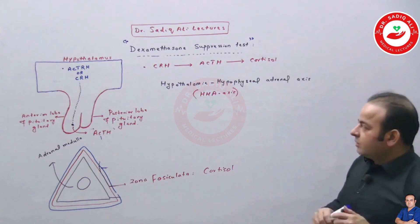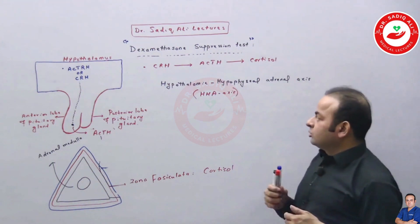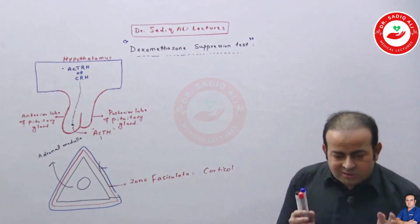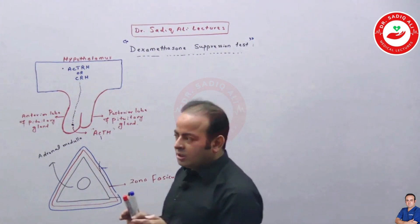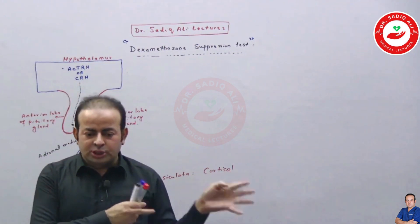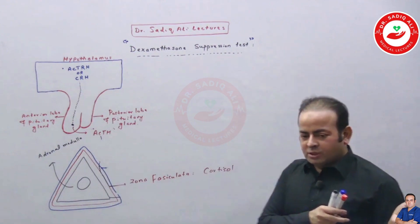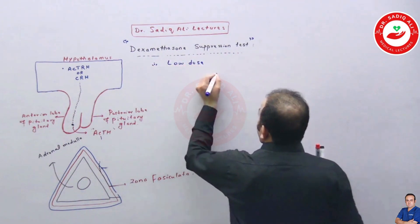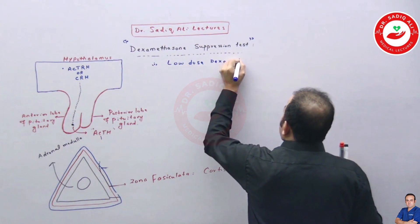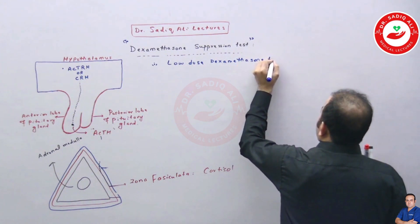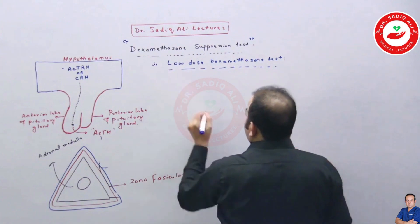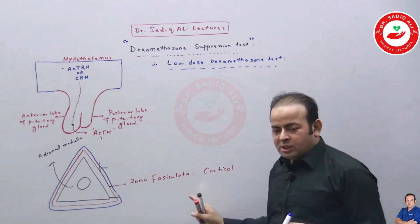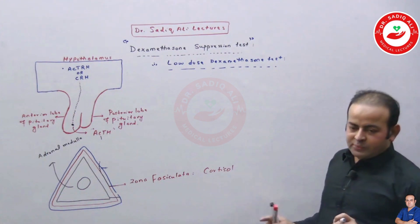The dexamethasone suppression test comes in two types: low dose and high dose. It is done to check for Cushing syndrome and also to identify the cause — whether it is pituitary, ectopic, or from the lungs. Dexamethasone is a synthetic steroid that acts exactly like cortisol, a glucocorticoid.